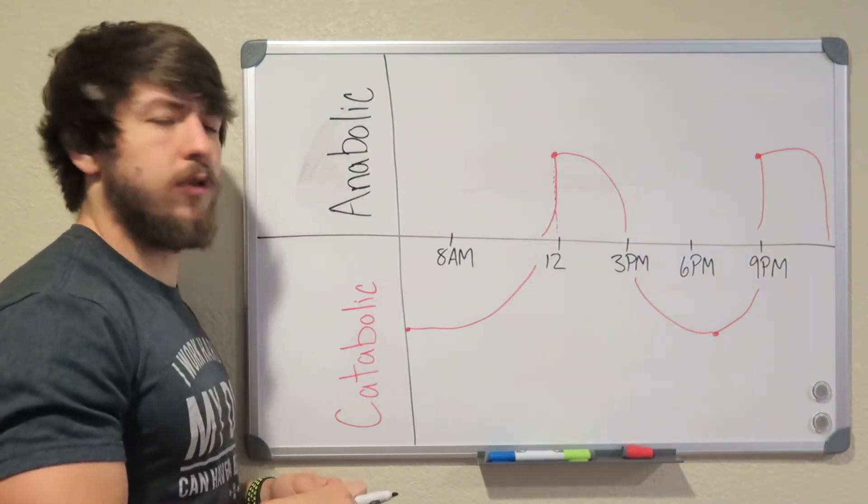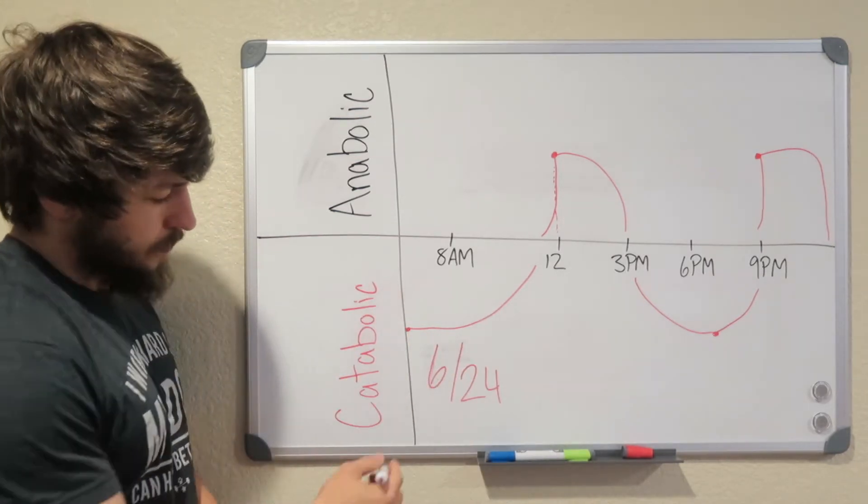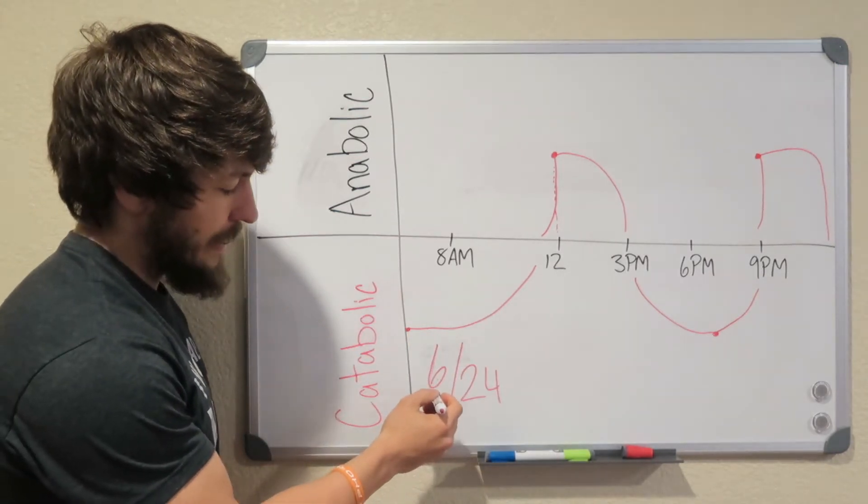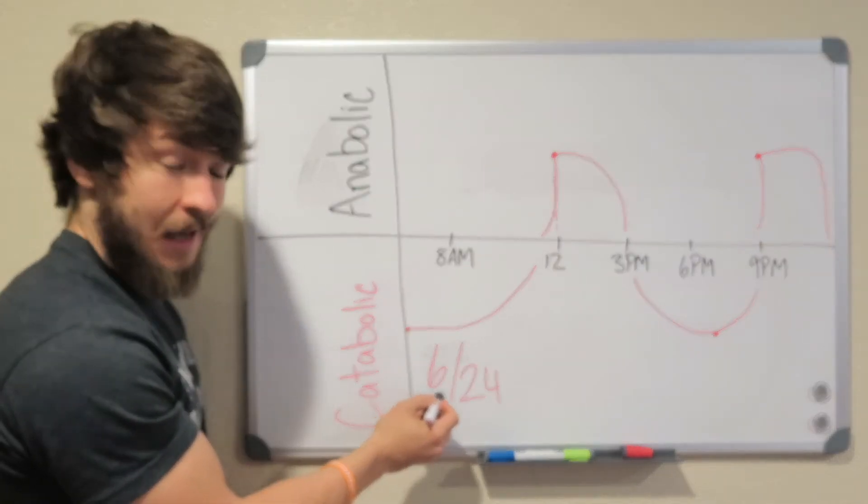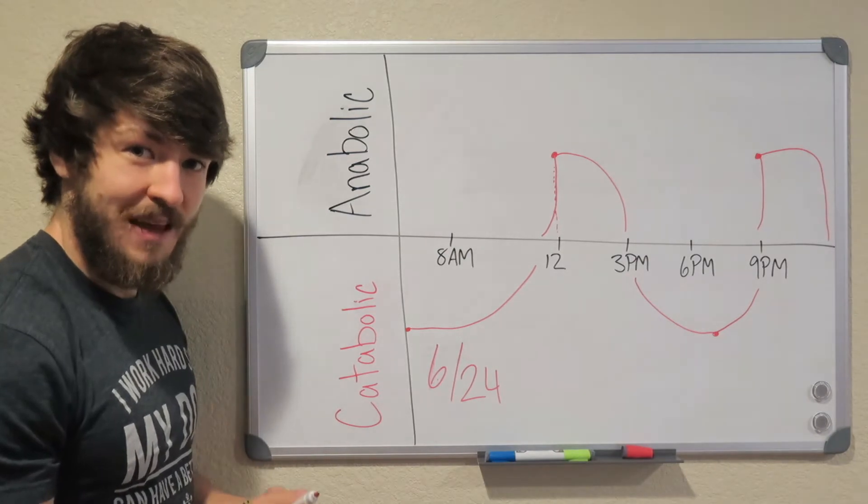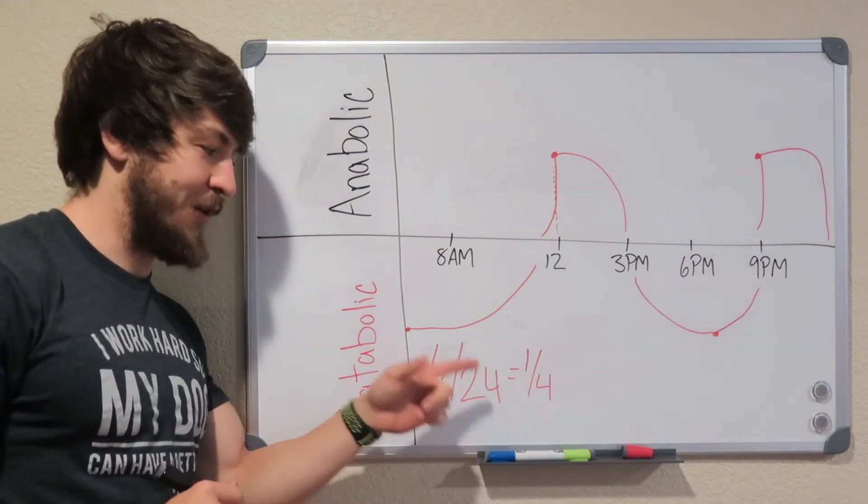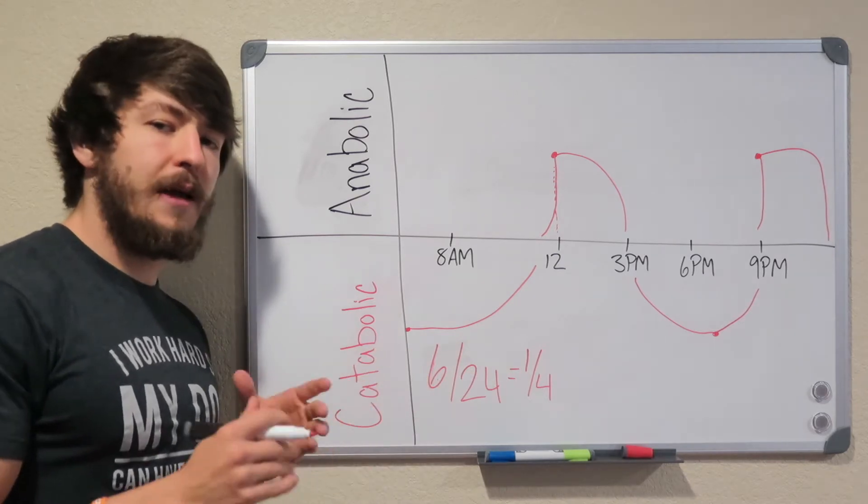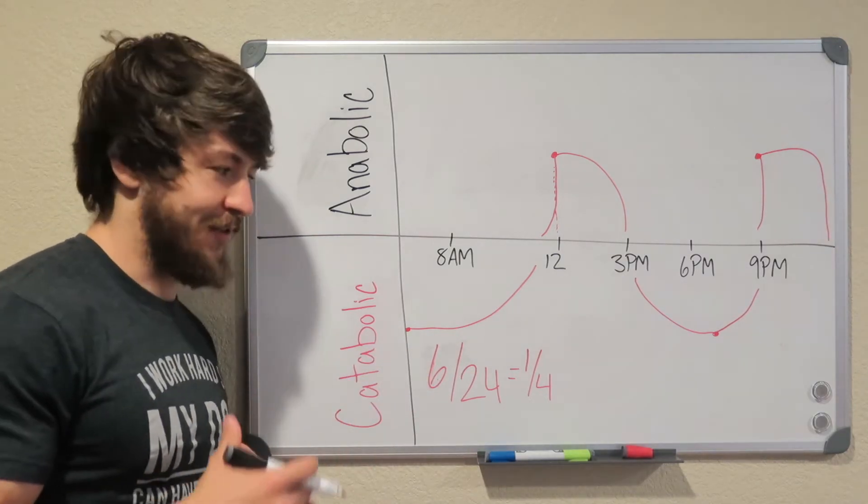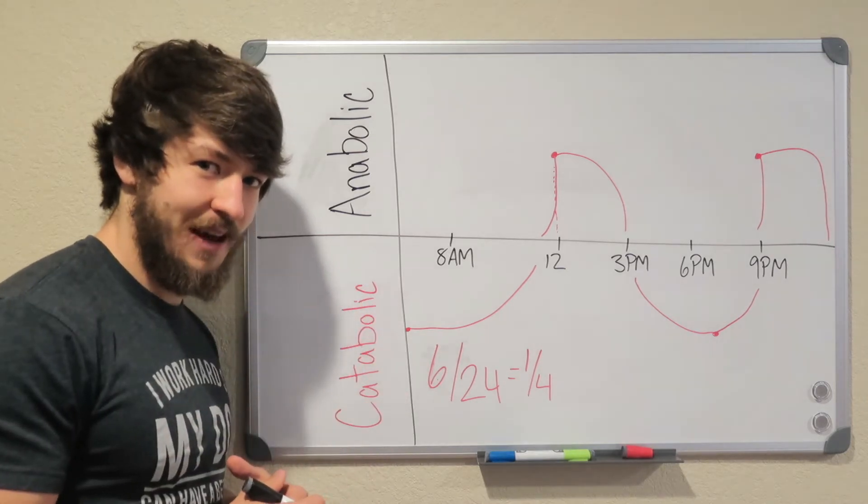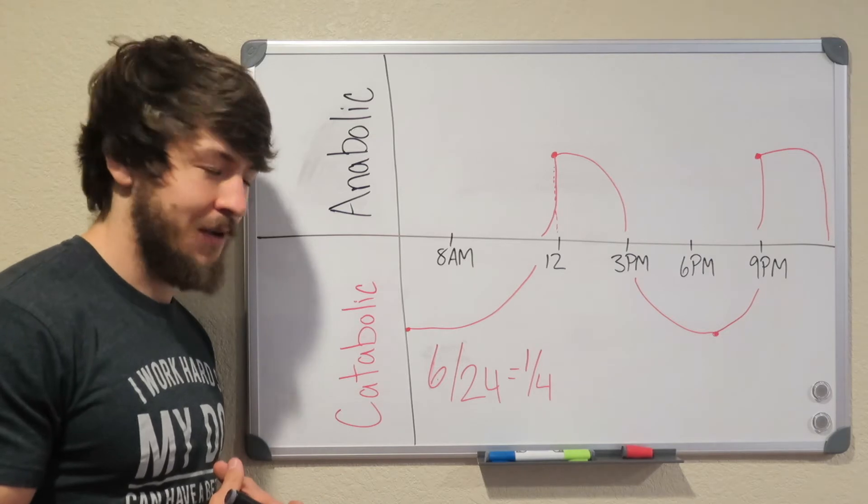So let's look at some numbers. When we look at this example, you guys only eating two meals a day, we're going to be in the anabolic phase for only six out of the 24 hours out of the day. That comes out to be about one-fourth of your day. So now you're spending three-fourths of your day, the majority of your day, storing fat. Does it make sense why you're not getting the results you want yet?